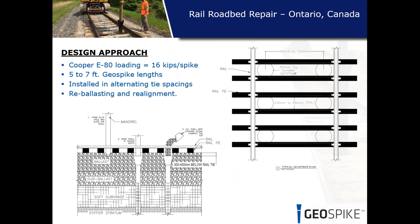For this job, Cooper E80 design loading equated to about 16 kips per spike, requiring GeoSpike lengths ranging from about five to seven feet using HDPE extenders. The spikes were installed in pairs at alternating tie spacings. After the work was done, the rail maintenance contractor came behind and re-ballasted, re-tamped the divots, and performed realignment in the portions of track that required it.